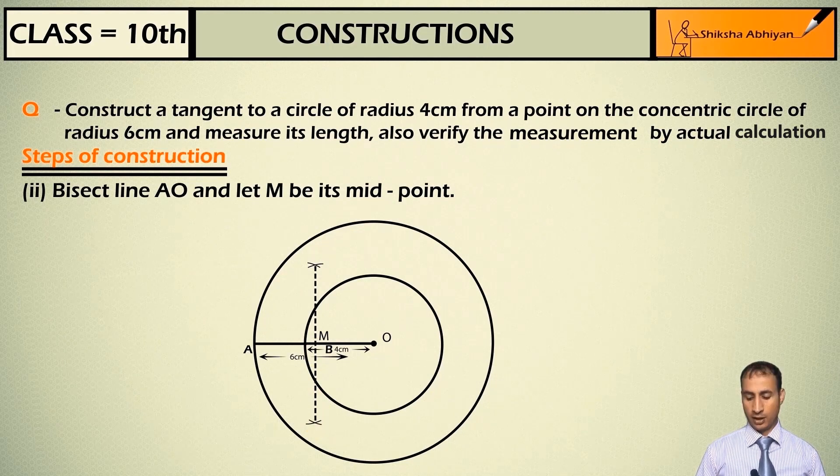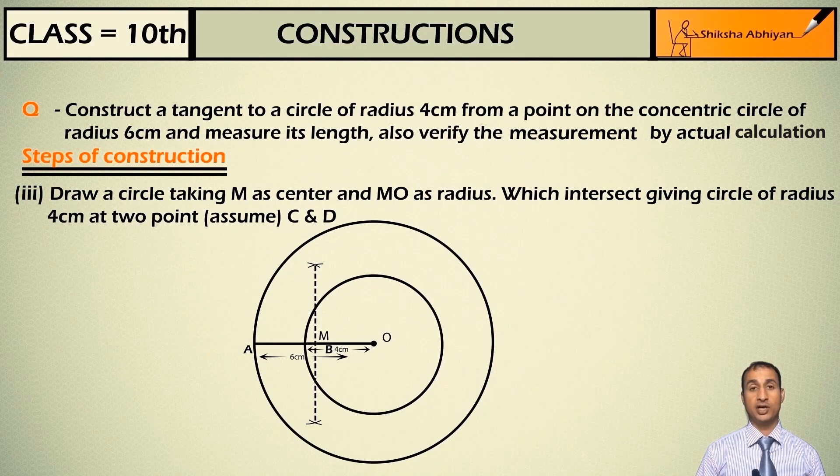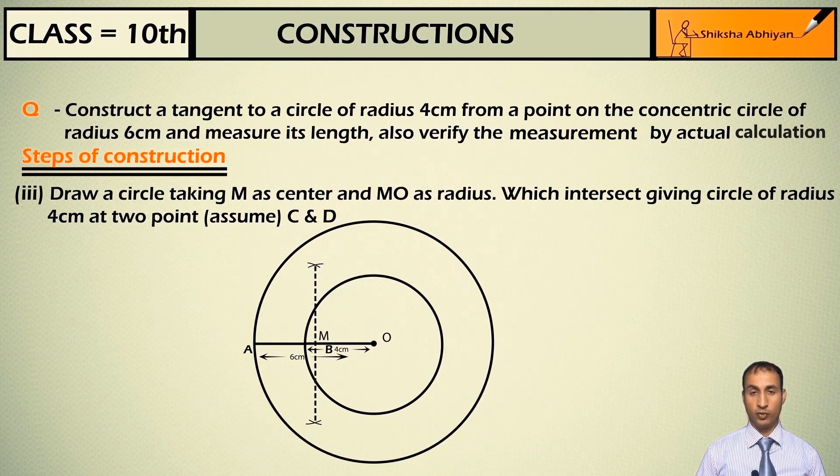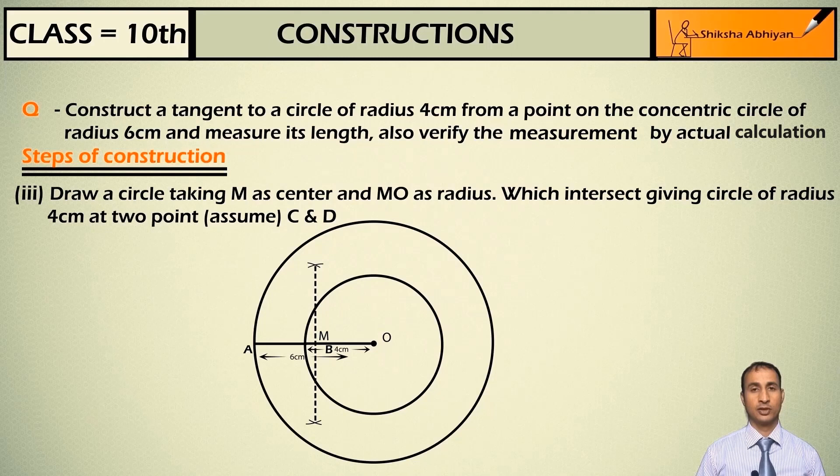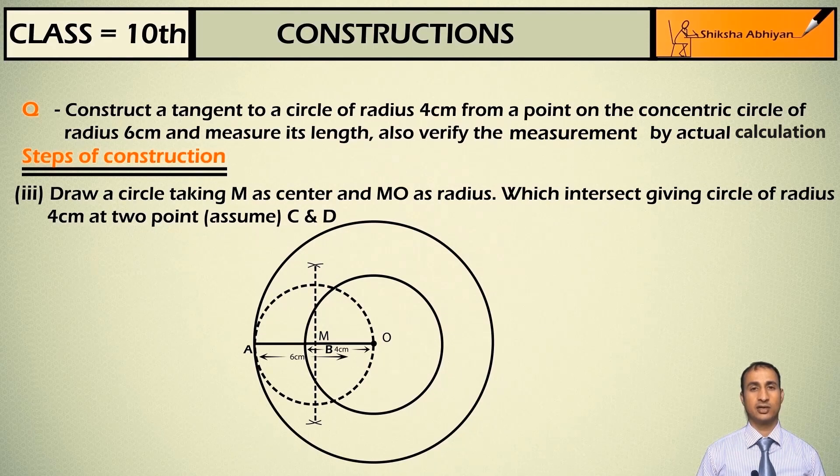Now draw a circle taking M as the center and MO as the radius. This new circle will intersect the circle of radius 4 cm at two points. Those points are C and D. So taking M as center, MO as radius, draw this, this is the new circle which is cutting the 4 cm circle at points C and D.